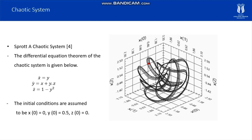In order for the mixing process to be carried out with high efficiency, the mixing propeller must be able to scan the area of the mixing container in general and reach the edge areas. Therefore, the choice of chaotic system is important. In this study, the Sprott-A chaotic system was used.